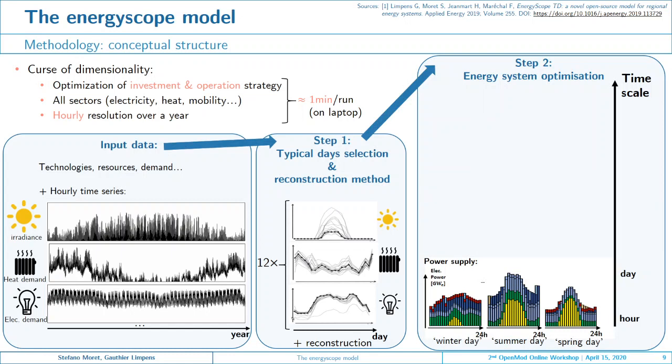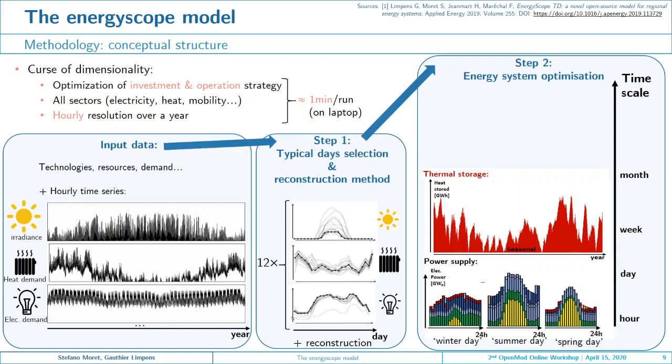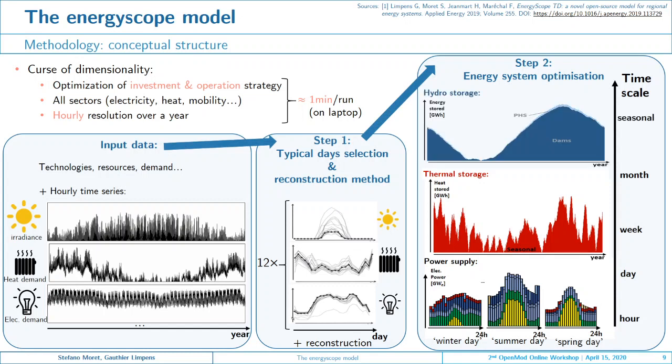The results we obtain include hourly resolution over a day — for example, we can see the very typical production profile of photovoltaics in yellow. We are also able to capture weekly-to-monthly cycles for storage, illustrated here with thermal storage, as well as these seasonal cycles of storage, which can be optimized.